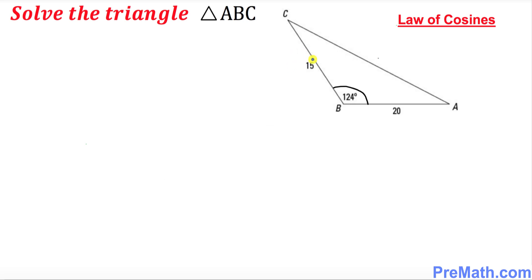In this triangle ABC, vertex A is this one, which means angle alpha is this one, and the side opposite to vertex A is lowercase a. For vertex B, angle beta is this one, and the side opposite to vertex B is lowercase b. Likewise, for vertex C, the angle is gamma, and the side opposite to C is lowercase c.